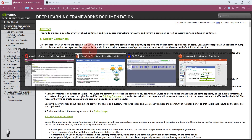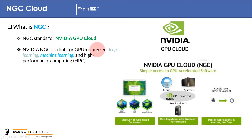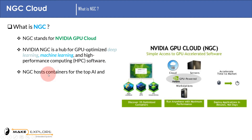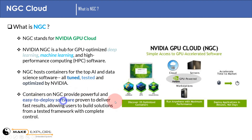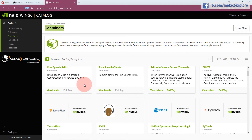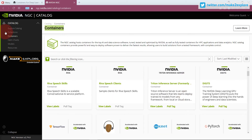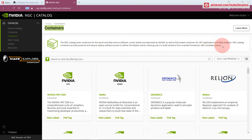Let's move forward and see what is NGC. NGC stands for NVIDIA GPU Cloud. NVIDIA NGC is a hub for GPU-optimized deep learning, machine learning, and high-performance computing (HPC) software. NGC hosts containers for the top AI and data science software, all tuned, tested, and optimized by NVIDIA. The NGC website provides powerful and easy-to-deploy software proven to deliver fast results, allowing users to build solutions from a tested framework with complete control. You will find information about getting started with NGC containers and models, as well as a catalog of various optimized containers for different GPUs. All links will be shared in the description.